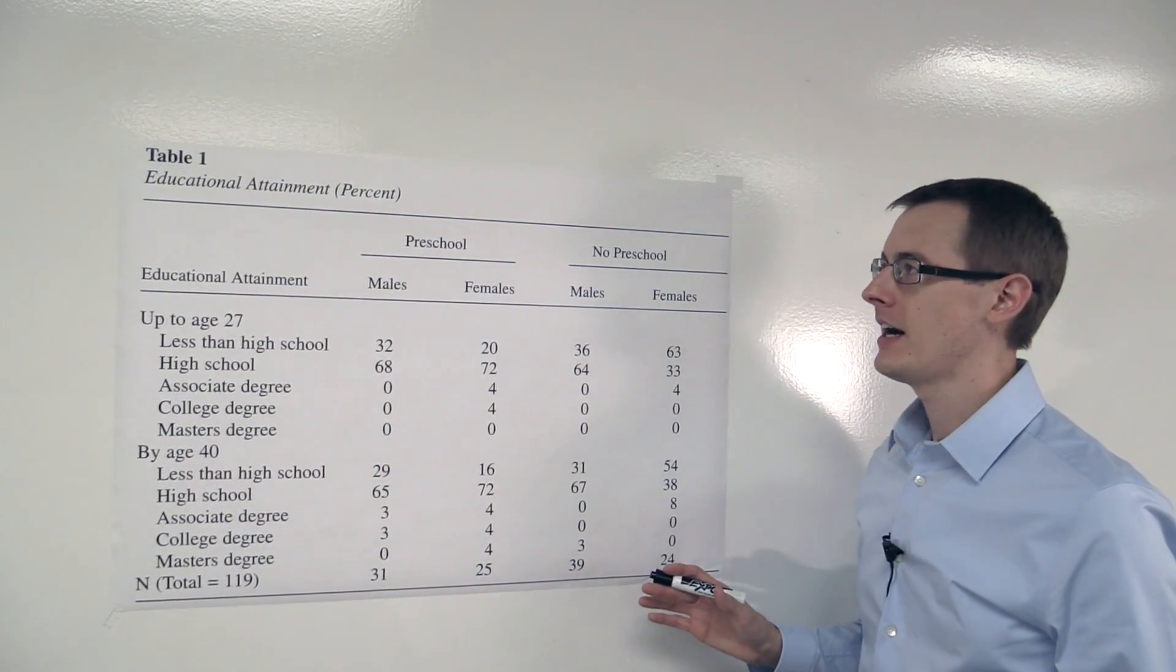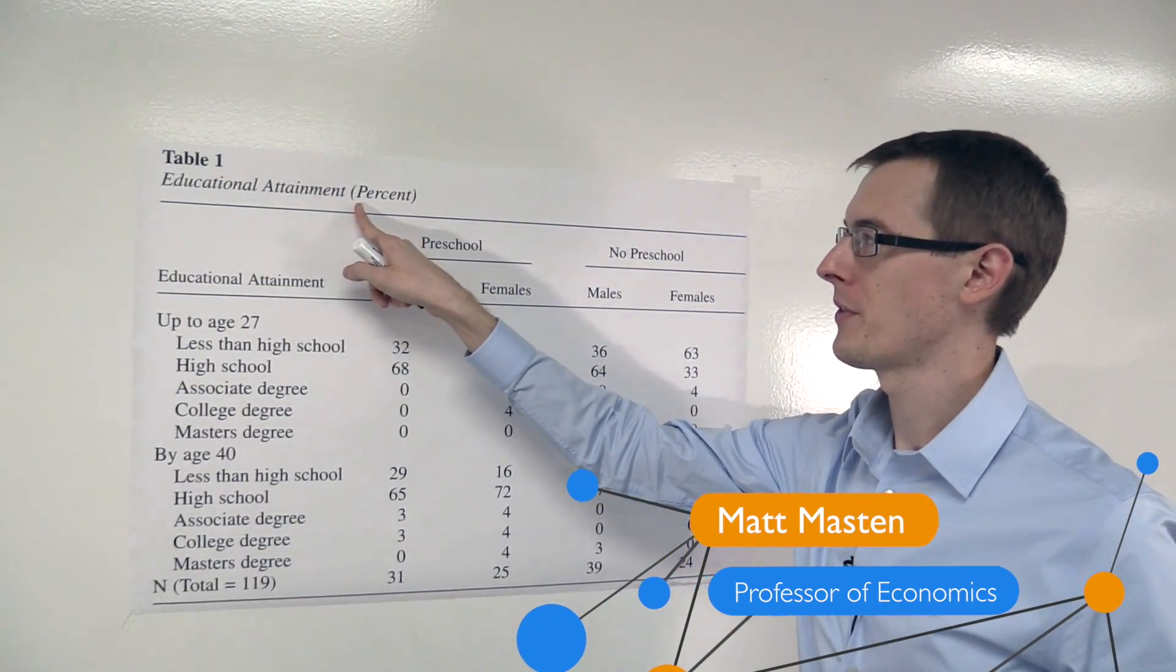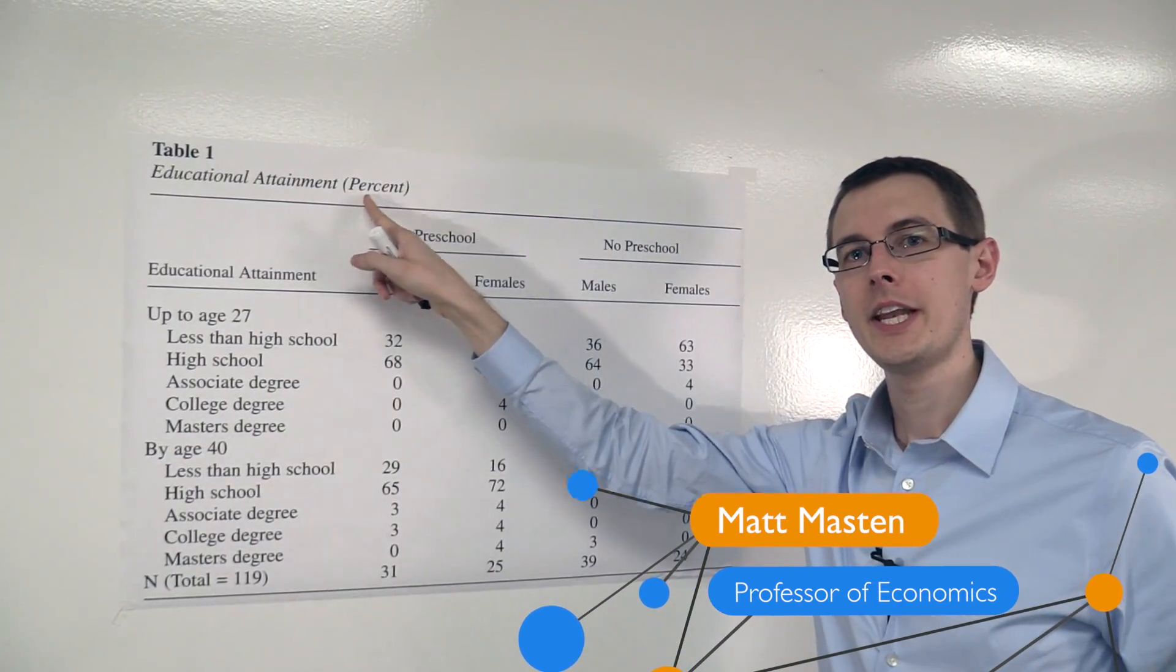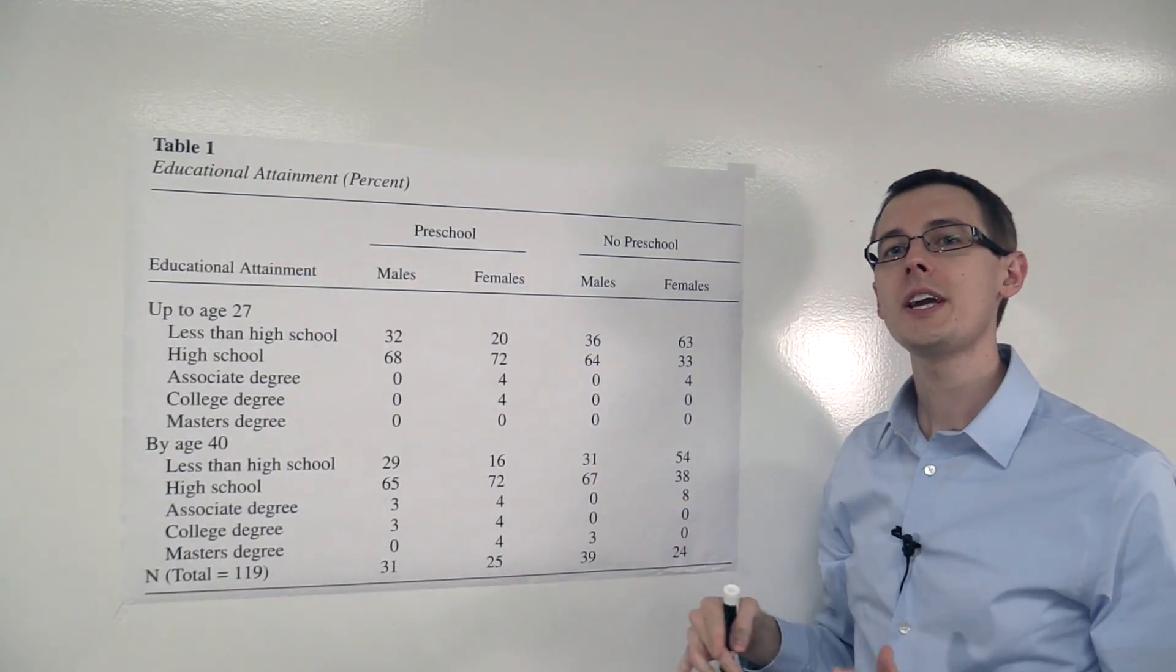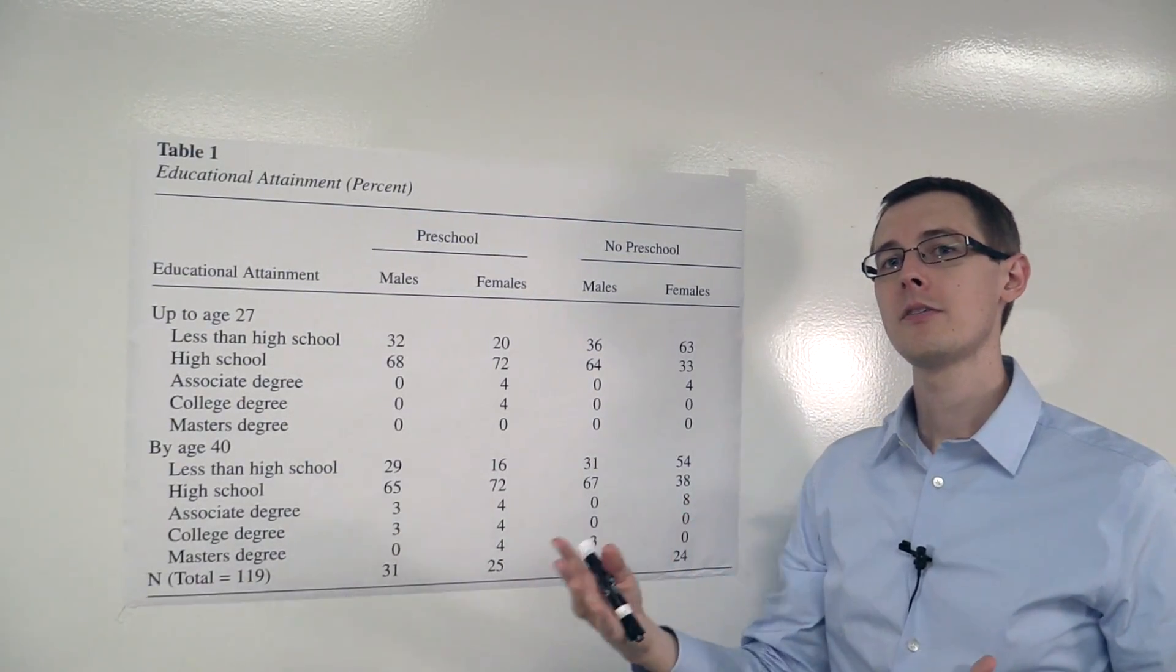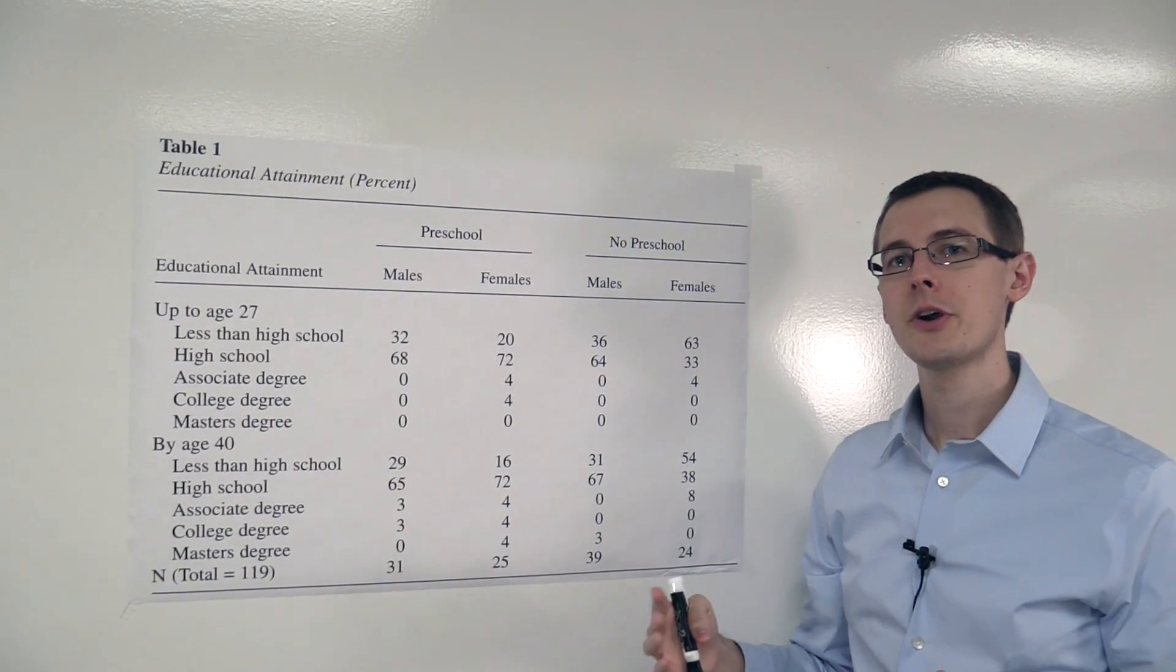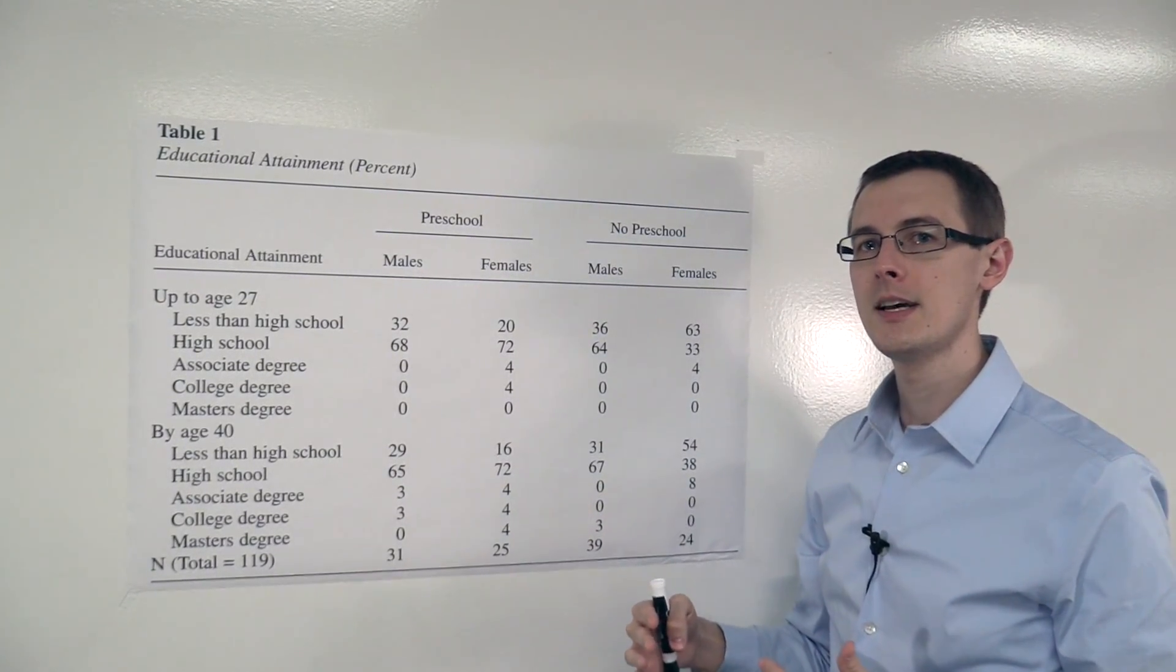Here we've got data on educational attainment for the students in Perry Preschool. Now remember the conditional average treatment effect. Here the researchers think that the treatment effect might be different for men versus women, so they're going to split the analysis by gender.